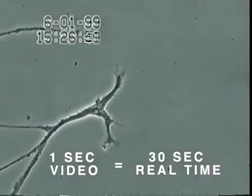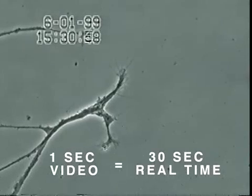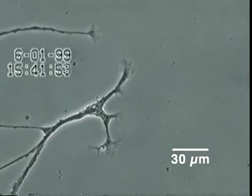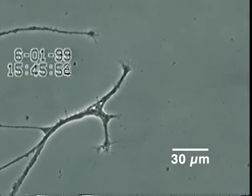In this experiment, neurons also isolated from snail brain tissue were grown in culture for several days, after which very low concentrations of mercury were added to the culture medium for 20 minutes.